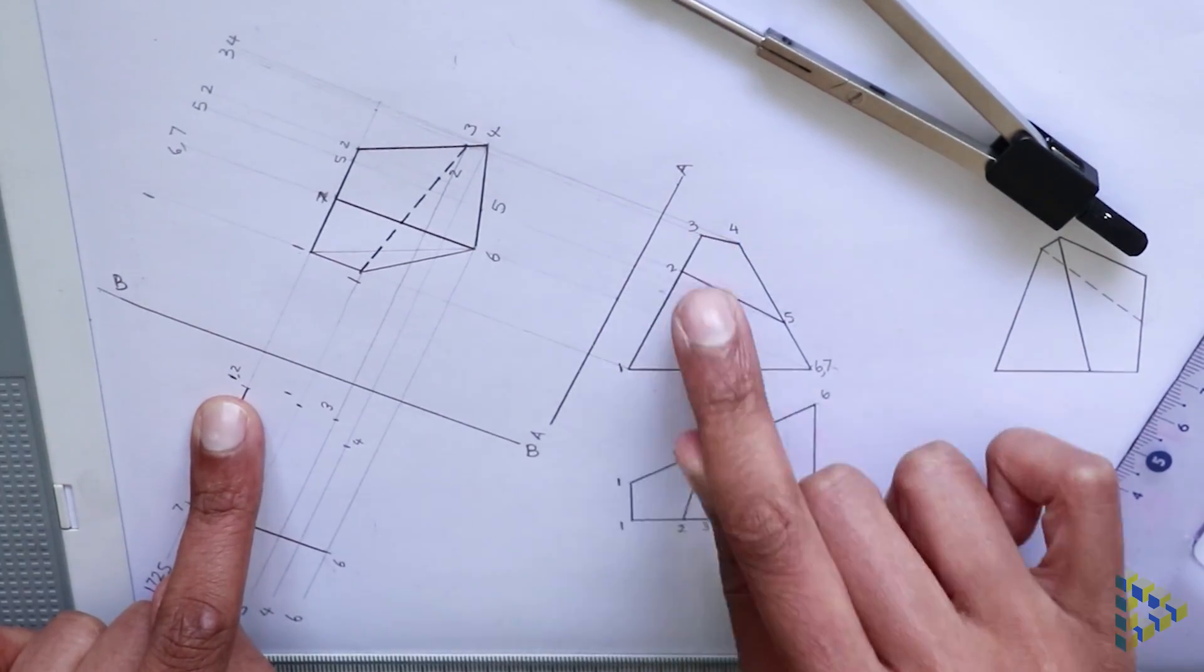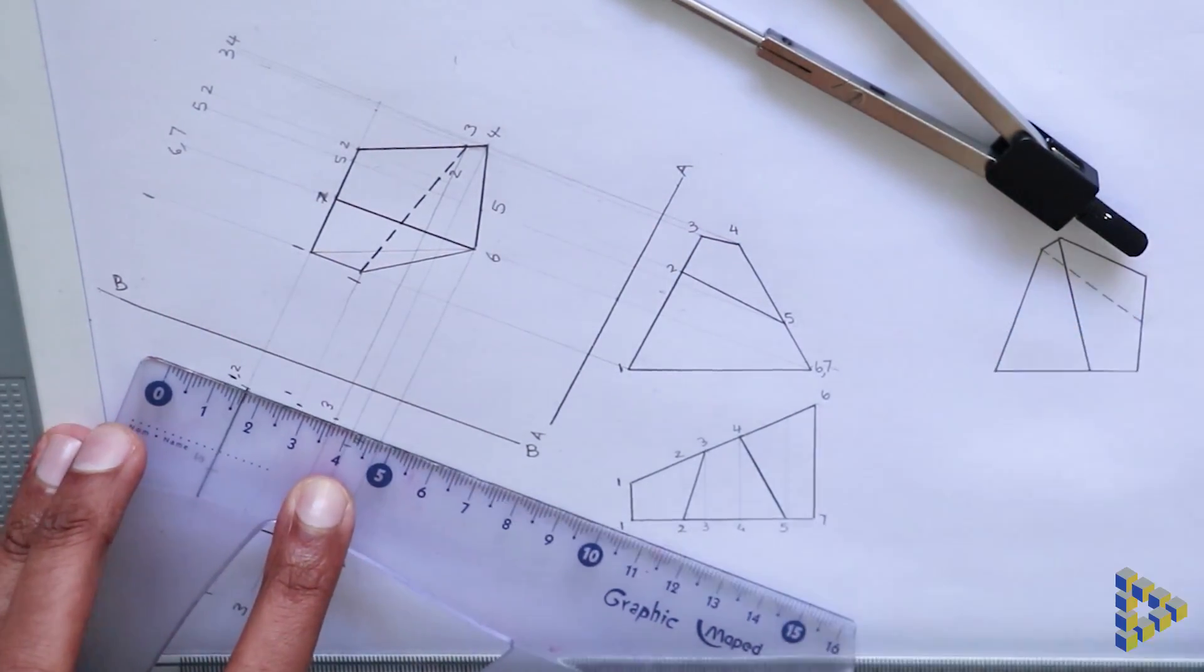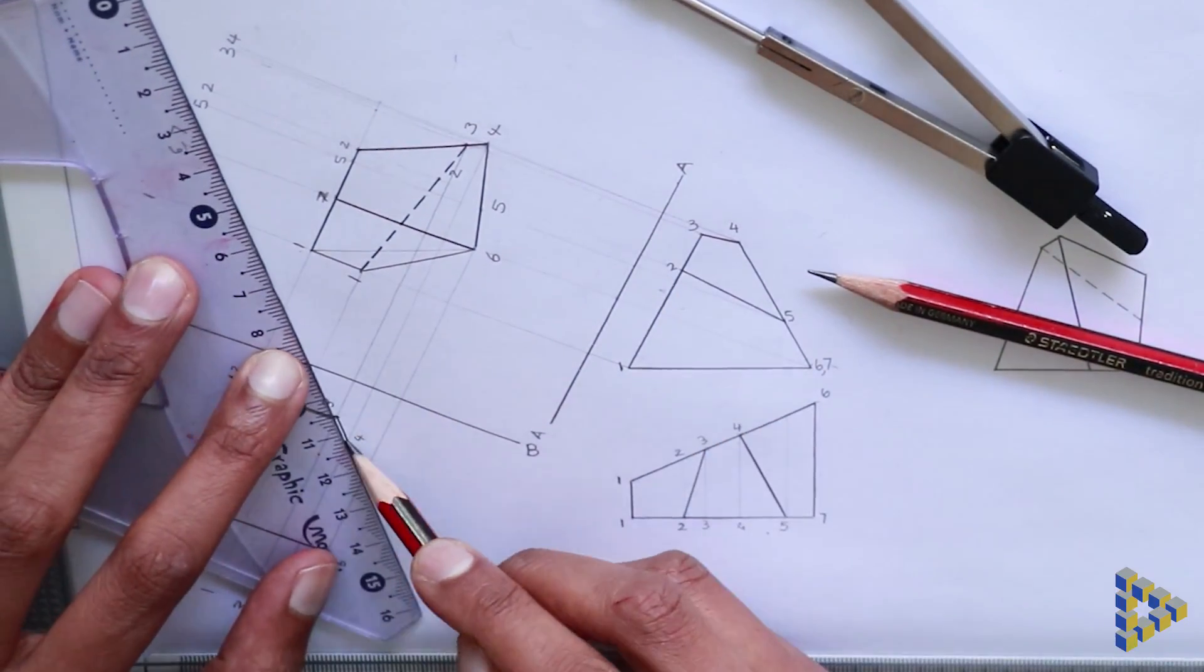One, two, three, and four are joined, so a line can be drawn to join these points on the secondary auxiliary drawing. Likewise, four is joined to five and six.